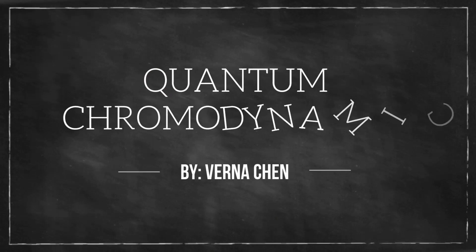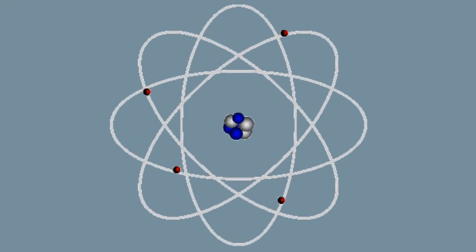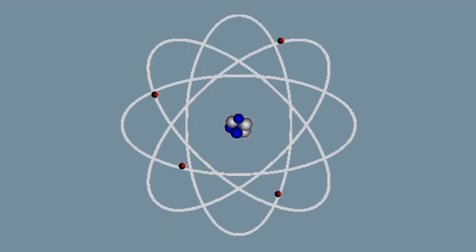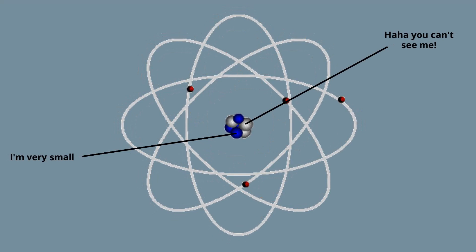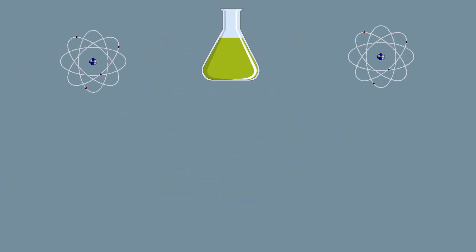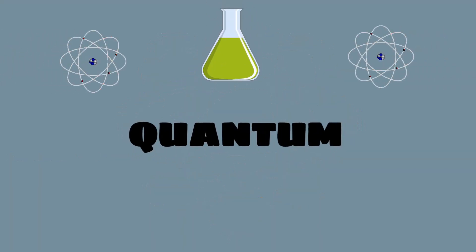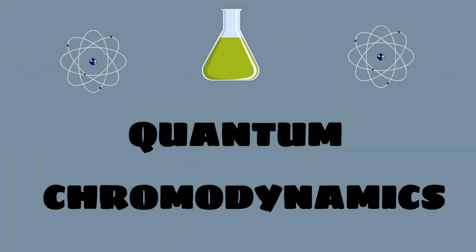Just kidding. Turns out, there are particles in the universe that are even smaller than subatomic particles. The science that deals with these particles is called quantum chromodynamics. But to fully understand quantum chromodynamics, we have to overview something a bit simpler: quantum electrodynamics.